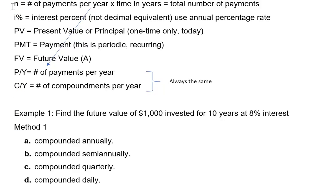N represents the total number of payments. This is found by taking the number of payments per year times the time in years. Typically we make payments monthly so this number of payments per year will be represented by the number 12.